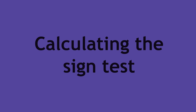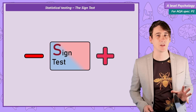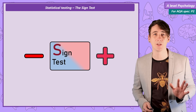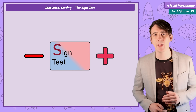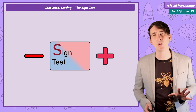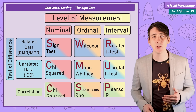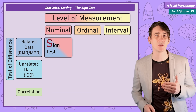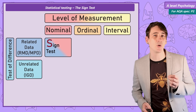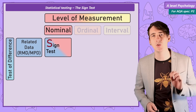Calculating the sign test. The one and only statistical test we can be expected to calculate is the sign test. Once you know how to do it, it is super simple and won't require maths more complex than addition and subtraction. The sign test is used when a researcher conducts a test of difference — an experiment, not a correlation — where the experimental design is either repeated measures or matched pairs, giving related data, and the level of measurement is at the nominal level.